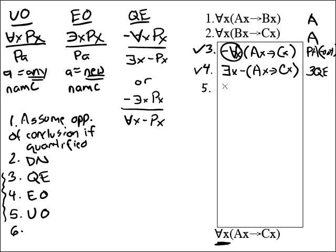With existential out, the rule says drop the quantifier, and then rewrite the rest of the formula, but replace the variable x with a name. What's the restriction on the names? It must be a new name. Let's write that down here by existential out. That's really important. New name when you're doing existential out.